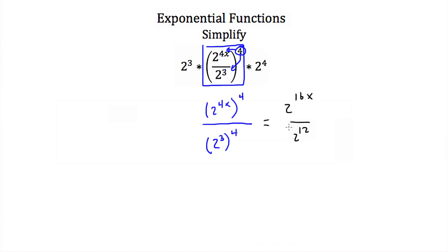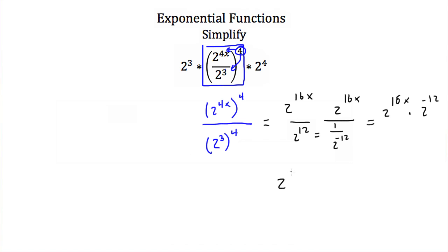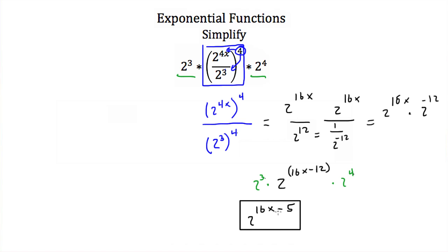Now I can think of this denominator as 1 over 2 to the negative 12th. So I have 2 to the 16x times 2 to the negative 12th. When I multiply these together, I add my exponents, giving 2 to the 16x minus 12. This is still multiplied by 2 cubed and 2 to the 4th power. Since these are all multiplied together, I can add the exponents: 16x minus 12 plus 4 plus 3 is minus 5. So this whole expression simplifies to 2 to the 16x minus 5.